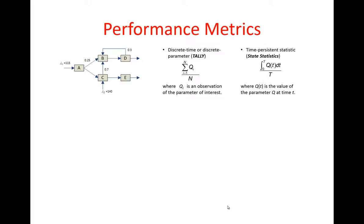We have discrete time or discrete parameters that are observational statistics. For these statistics we collect observations, individual observations of the parameter, and then we simply use the arithmetic average to estimate our parameter. These statistics are implemented in Simio using tally statistics.